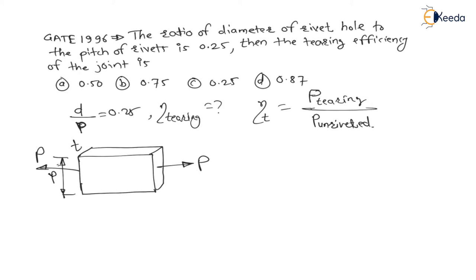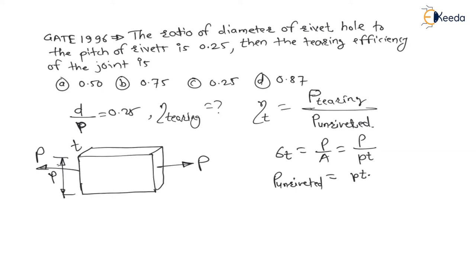This is the unriveted plate. For this unriveted plate, sigma t equals P divided by area, which is p into t. Therefore, force on unriveted plate is equal to p into t into sigma t.